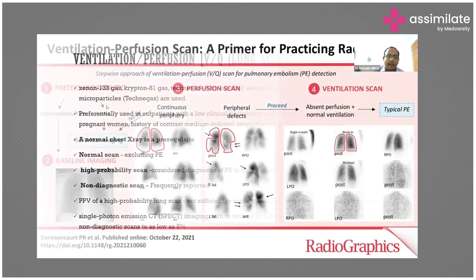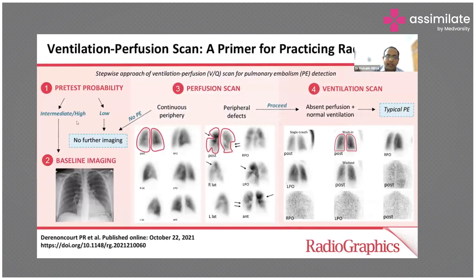If the pre-test probability is low, nothing further is needed. If intermediate or high, and the baseline chest X-ray is normal, a perfusion scan is done. If the perfusion scan is normal, nothing further is done. Only if the perfusion scan shows defects do we proceed to a ventilation scan, to see if there is a corresponding defect.